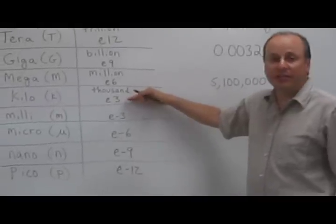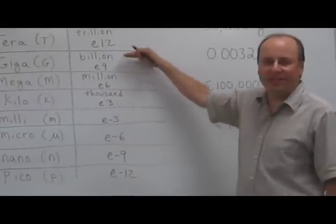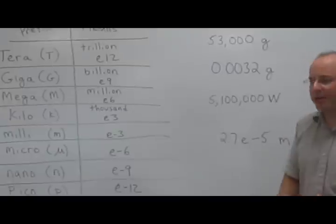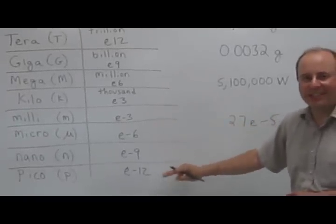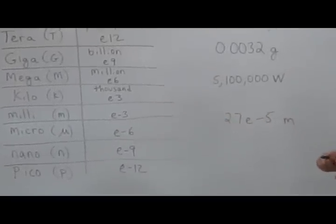So you have thousands, millions, billions, trillions. On the smaller end, you have thousandths, millionths, billionths, and trillionths of a standard unit.